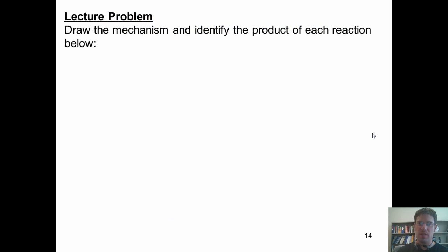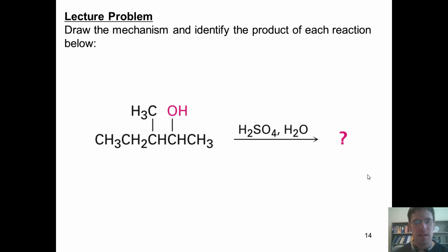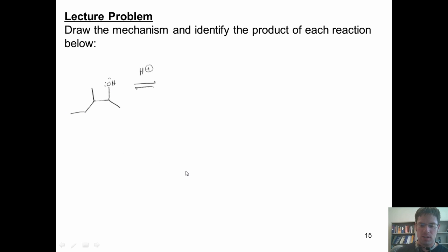Draw the mechanism and identify the product of this reaction shown here — this alcohol treated with H2SO4 and water. As I'm going to show you the answer momentarily, if you'd like to pause the video and attempt it on your own beforehand, you're welcome to. Here's how it goes down. I've got my starting material here that interacts with an H+ source, that is my H2SO4.